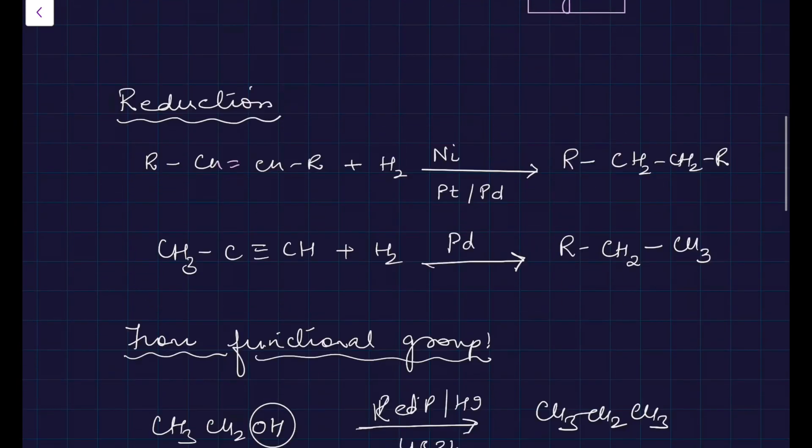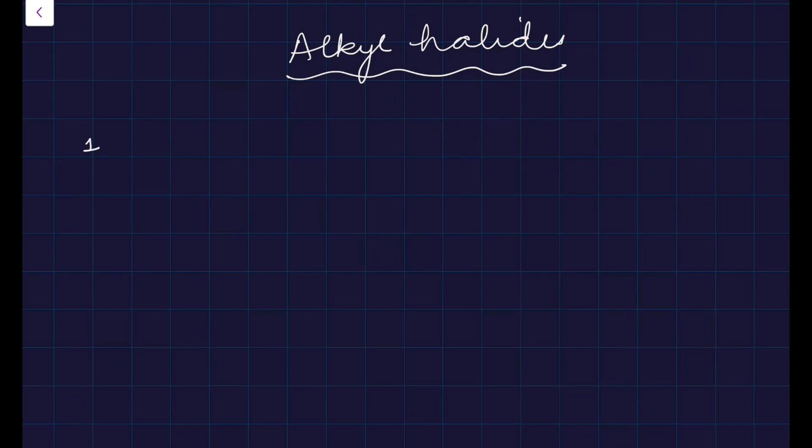Now let's pick up alkyl halide. First is simple reduction. You take any alkyl halide and reduce it with zinc and hydrochloric acid. For example, ethyl fluoride, you produce hydrogen with the help of Zn and HCl, and straight away you get alkane plus HCl as byproduct.